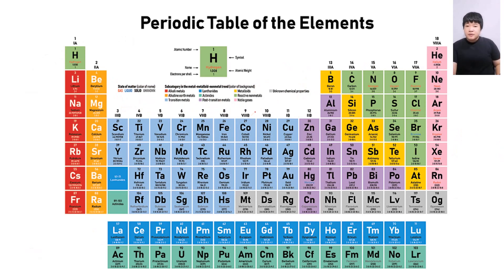The simplest way to identify whether it's an element or not is by looking into periodic table. Every single box in the periodic table represents an element. Whether the element in the form of atoms or in the form of molecules.